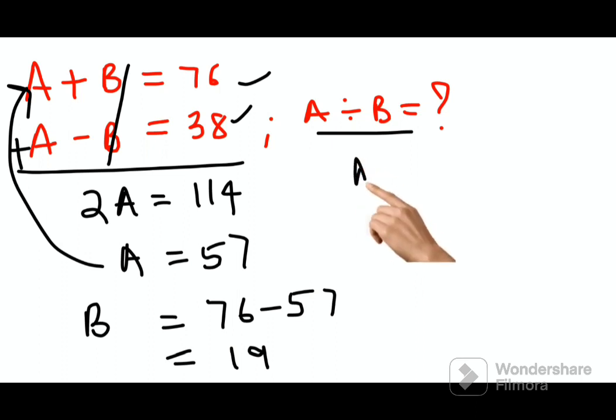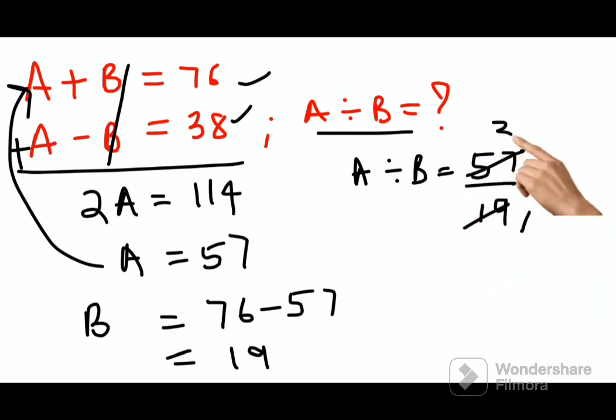So basically A divided by B is 57 upon 19. 19 ones are 19, threes are... So the answer for this one is directly 3.